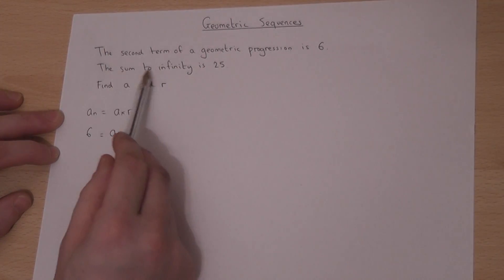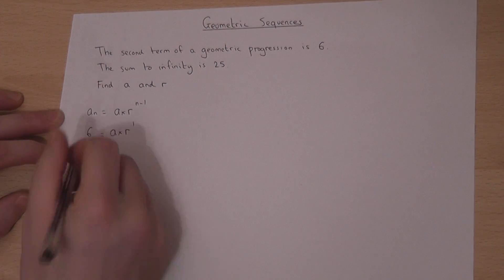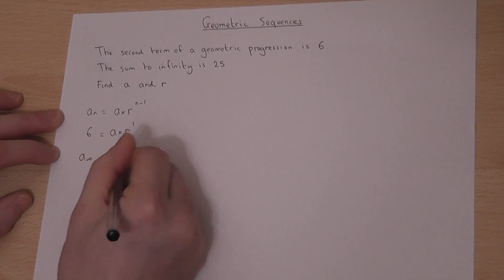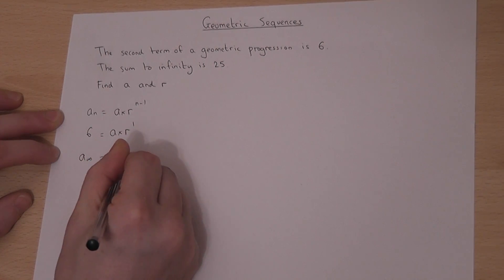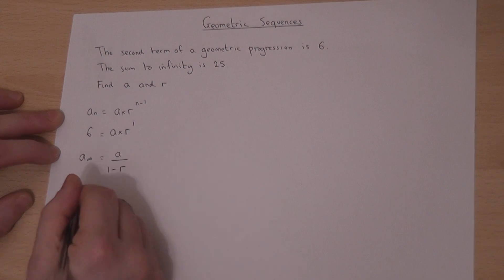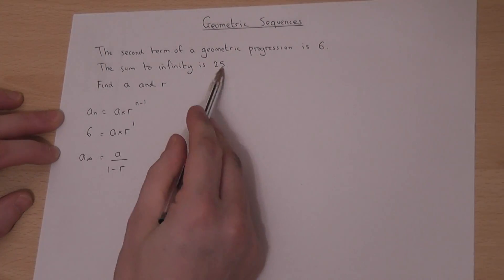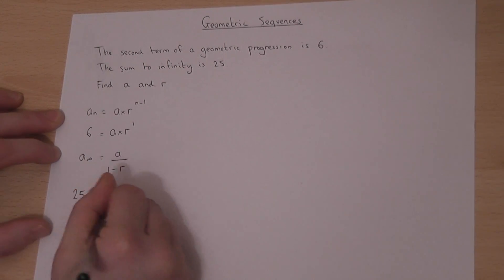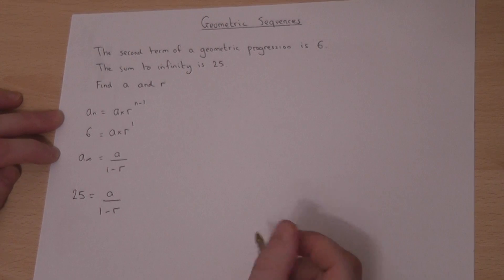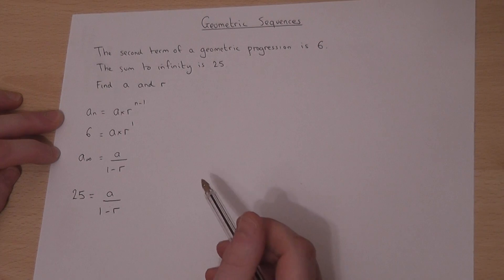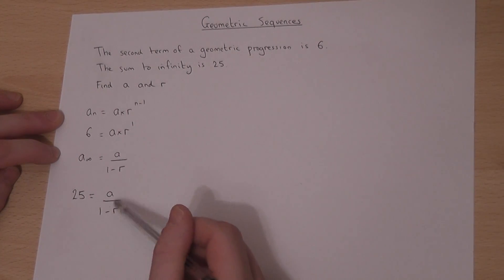We also know the sum to infinity is 25. Generally, S infinity equals a over 1 minus r. So if the sum to infinity is 25, then 25 must equal a over 1 minus r. So we have two separate equations to use, and somehow we must solve them together to find a and r.